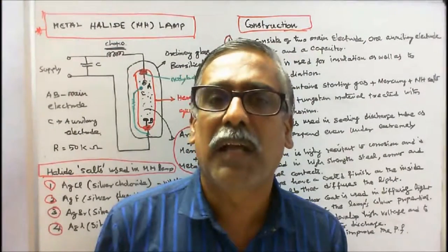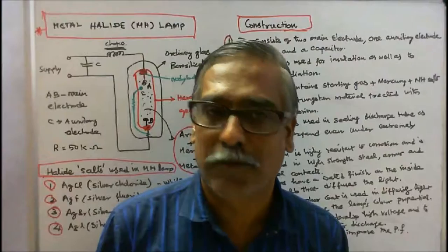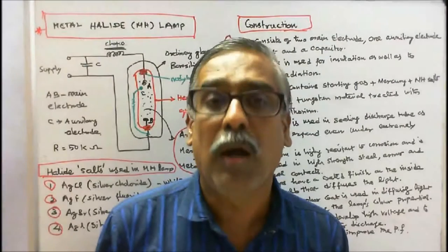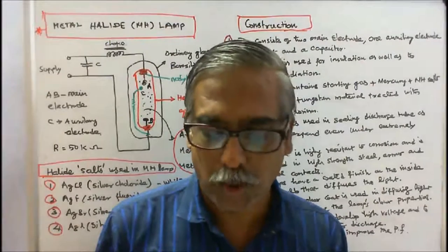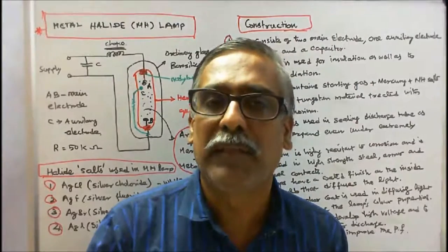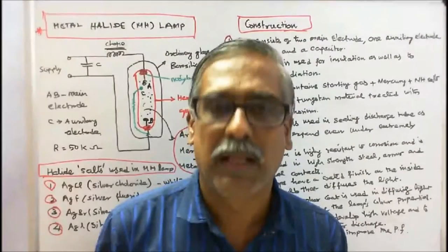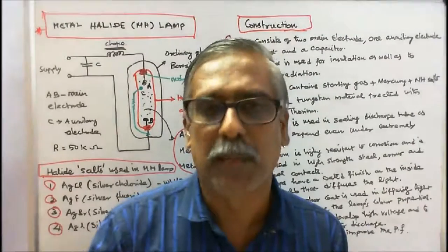Iodides are used to improve the color characteristics of light. A halide is a chemical compound of a halogen combined with an electropositive element. A halogen is a monovalent element which readily forms negative ions.